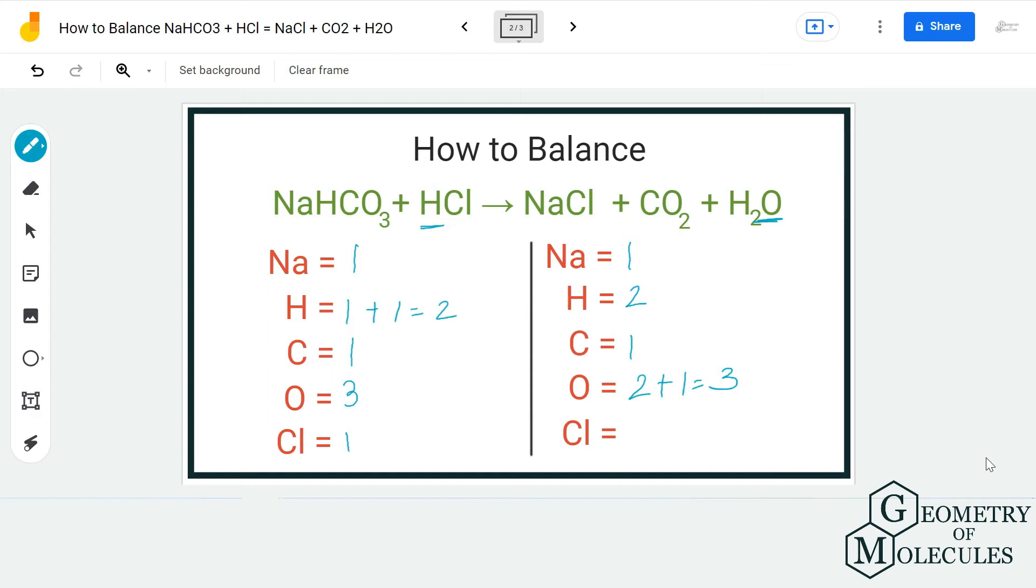So this equation is already balanced. We do not need to add any coefficients to this equation. What happens generally is that people do not consider all the number of atoms on both the sides and that leads to confusion. But here, after counting atoms on both the sides, we come to know that it is already a balanced equation.